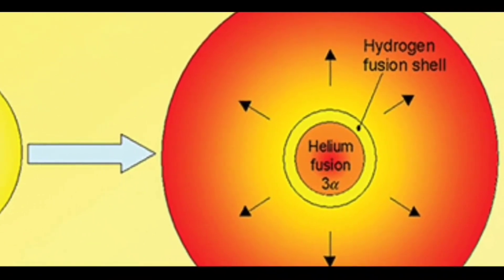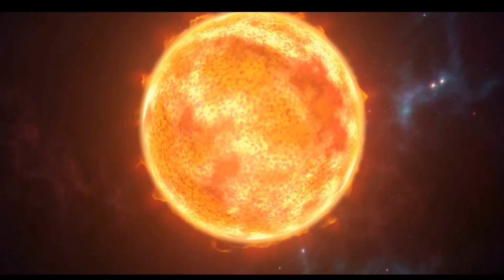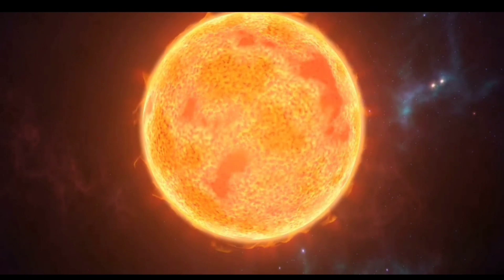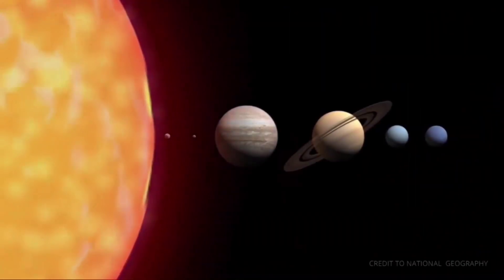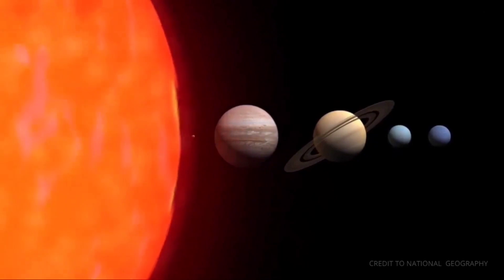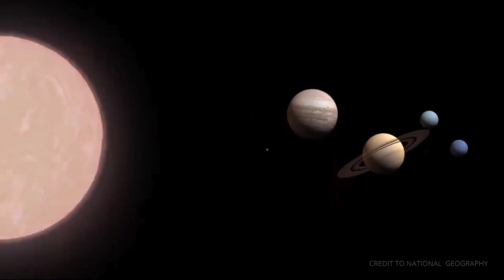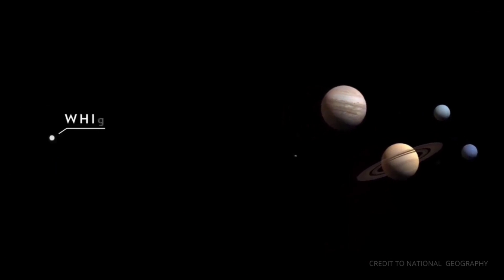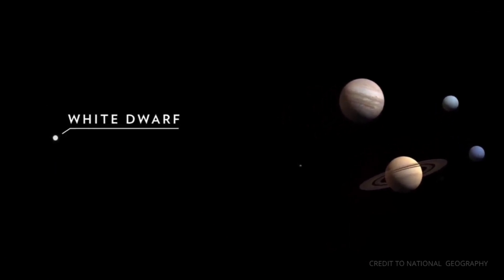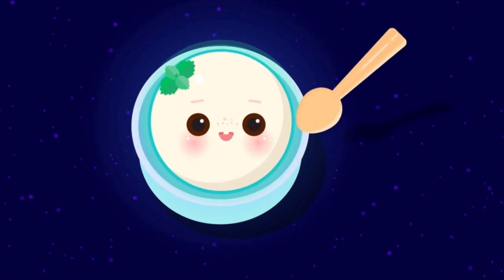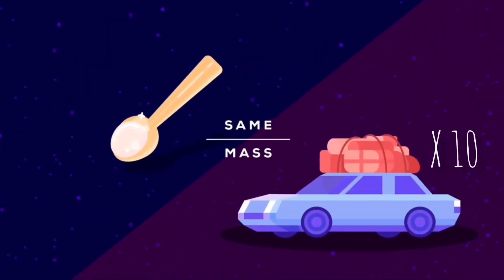As it expands, the surface temperature will decrease and it will get reddish. The size of the sun will be 200 times today's size and probably will touch the earth's orbit. The core will be the size of earth with half the mass of the sun — this is called a white dwarf. One spoonful of that object will weigh about 13,600 kilograms.